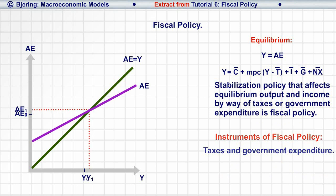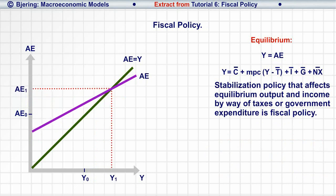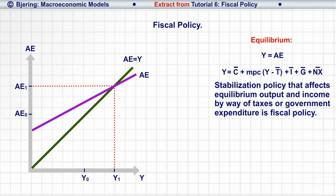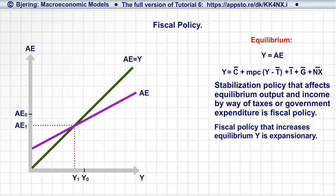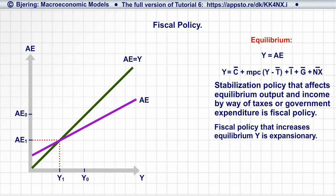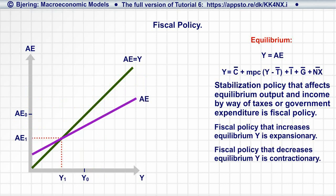Fiscal policy that increases equilibrium output and income, like an increase in government expenditure and or a decrease in taxes, is said to be expansionary. While fiscal policy that decreases equilibrium income and output, like a decrease in government expenditure and or an increase in taxes, is contractionary. And fiscal policy that leaves equilibrium output and income unaffected is neutral.